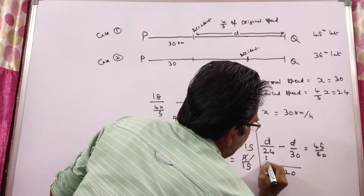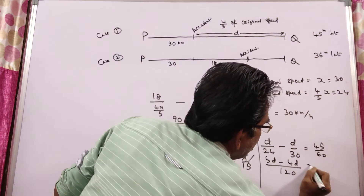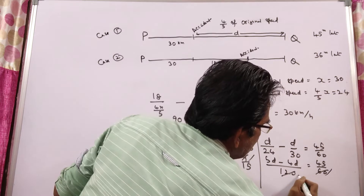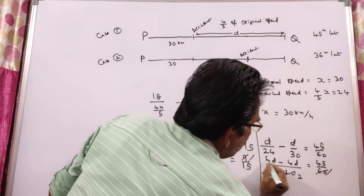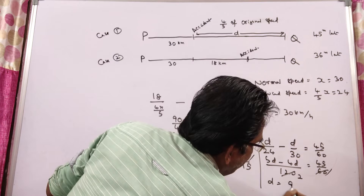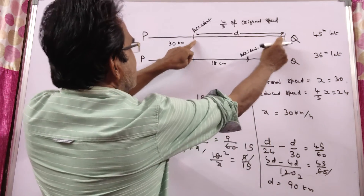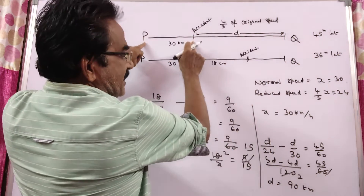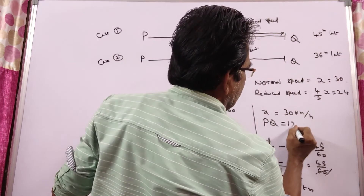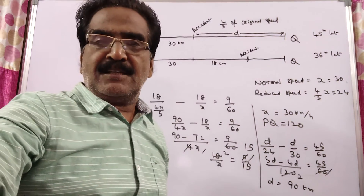LCM 120, so 5D minus 4D equals 45/60 multiplied by 120, giving D equals 90 km. So friends, this distance D is 90 km, plus the initial 30 km, so PQ equals 90 plus 30, which is 120 km. That is your answer, friends. Thank you.